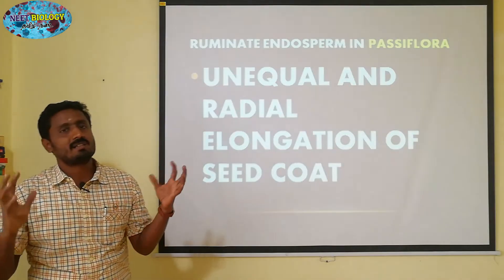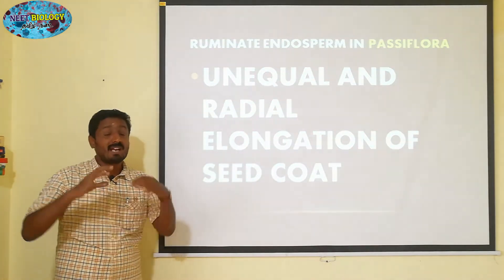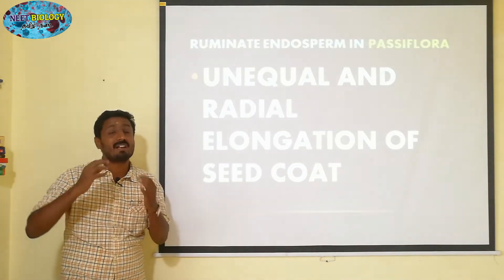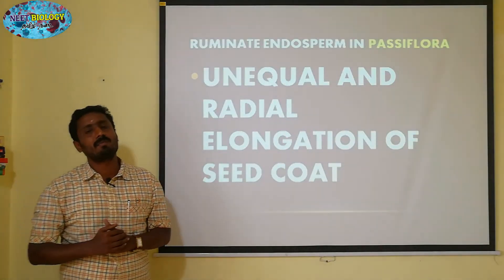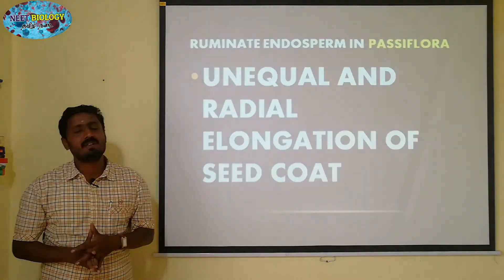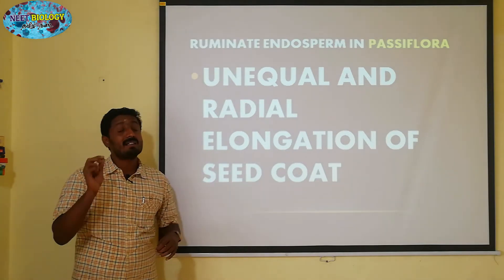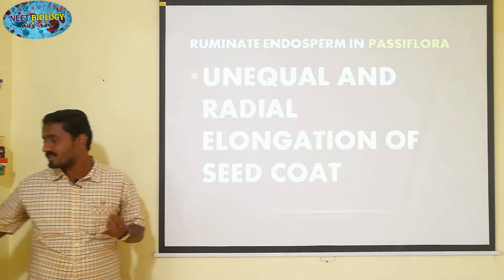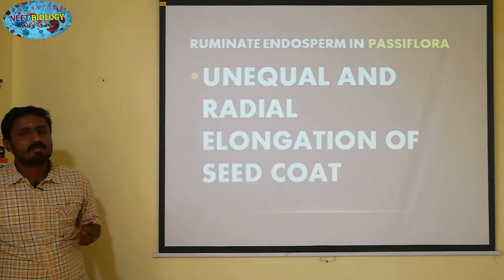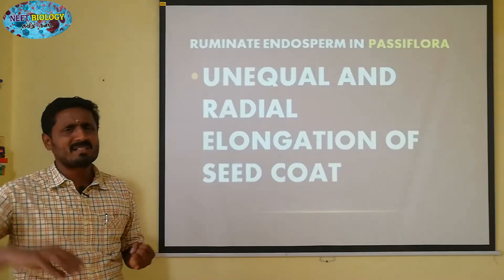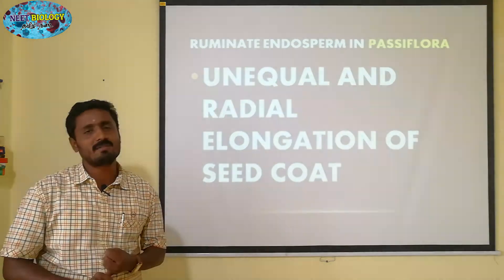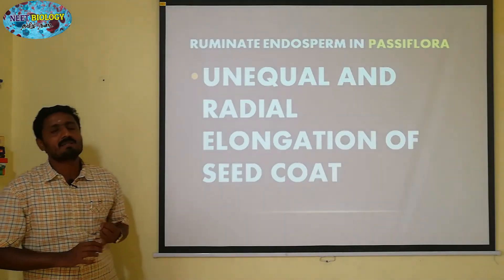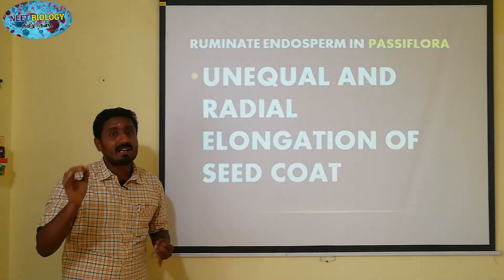The radial wall is involved. Passiflora is specifically the example used to explain radial elongation of the seed coat, which leads to the ruminate condition of the endosperm.